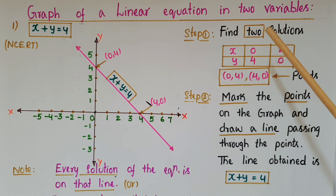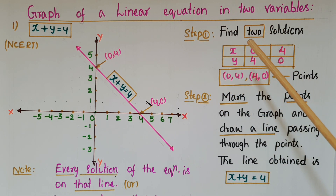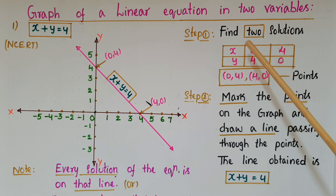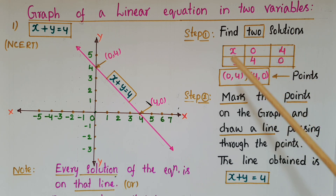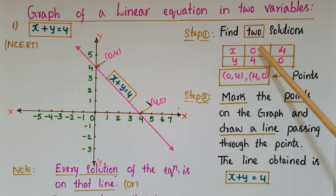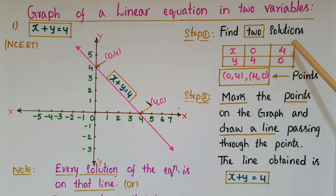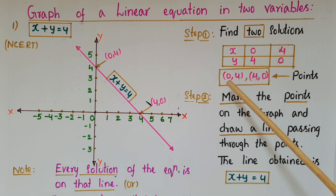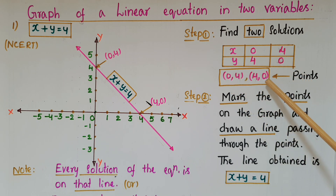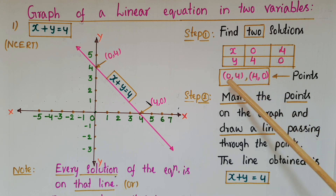We need a minimum of two solutions for this equation. We can write those solutions in a table form like this — x and y. If x is equal to 0, then y is equal to 4, and if x is equal to 4, then y is equal to 0. So the solutions are (0, 4) and (4, 0).